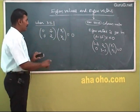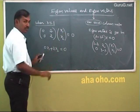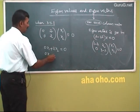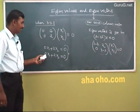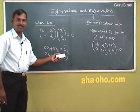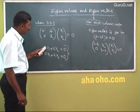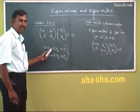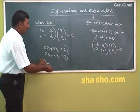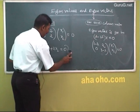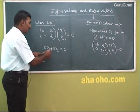Multiplying out for λ = 1: we get 0·x₁ + 2·x₂ = 0 and 0·x₁ + 2·x₂ = 0. Both equations represent the single equation 2x₂ = 0. With one equation and two variables, we have infinitely many solutions. We need a non-zero solution, so we set x₂ = 0, and x₁ can be any non-zero value.